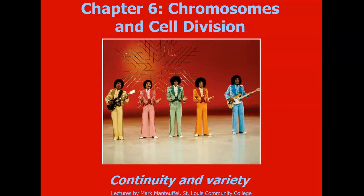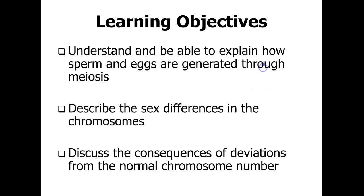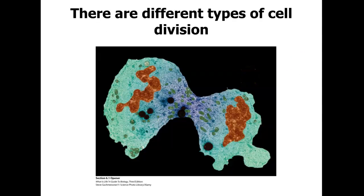We're going into unit 6 where we're going to discuss chromosomes and different types of cell division. There are going to be different types of cell division. First, we're going to have normal cell division in eukaryotic cells, referred to as mitosis. Then we're going to talk about cell division in prokaryotes, which is binary fission. Later on, we're going to move on to cell division in gametes, or sex cells, and that's going to be meiosis.